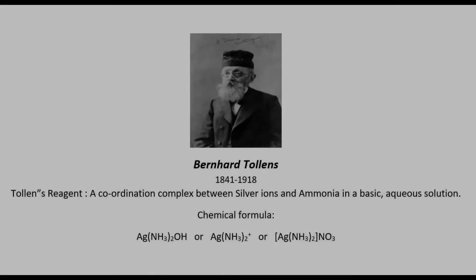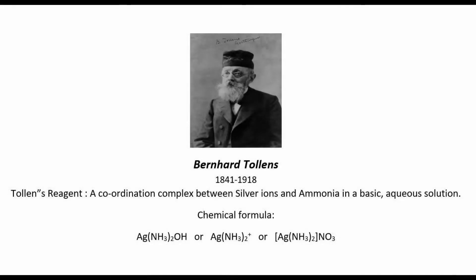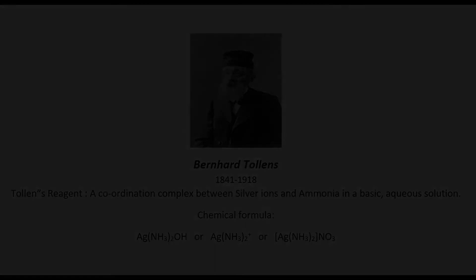The Tollens test is performed using Tollens reagent, which is a coordination complex between silver ions and ammonia in a basic aqueous solution. The reagent is named after its discoverer Bernhard Tollens, a German chemist. Tollens reagent is an unstable complex with a short shelf life, and is therefore prepared afresh whenever a test is to be performed.